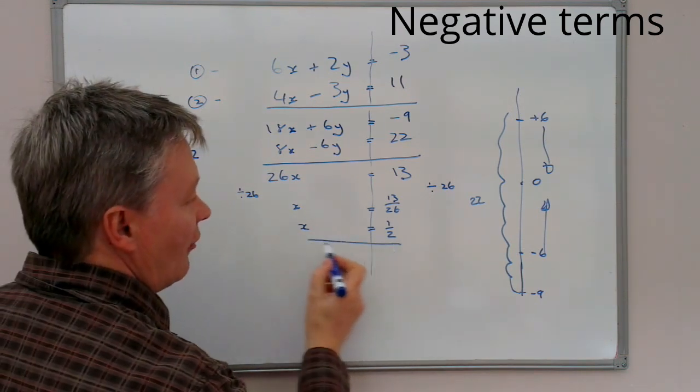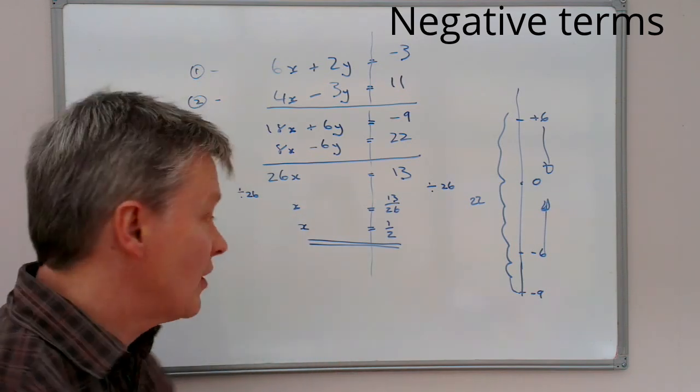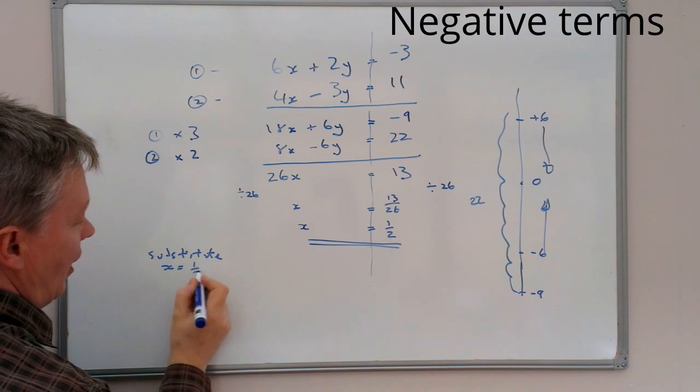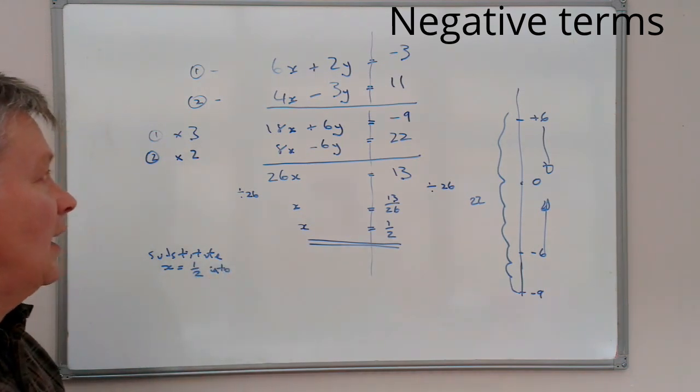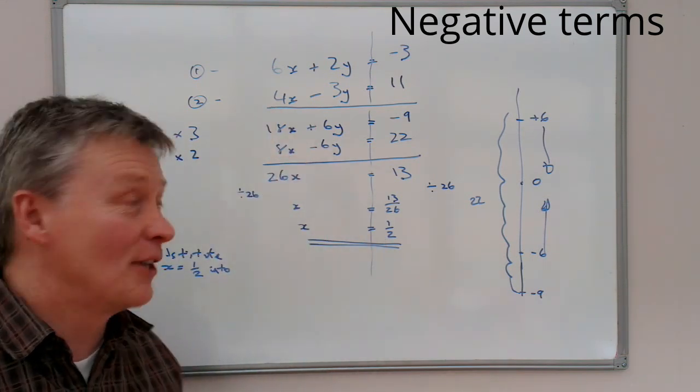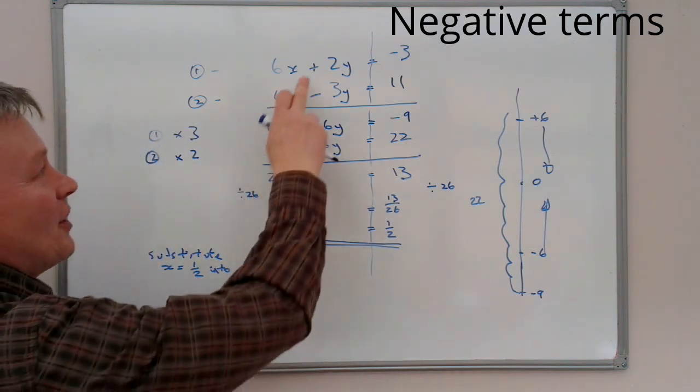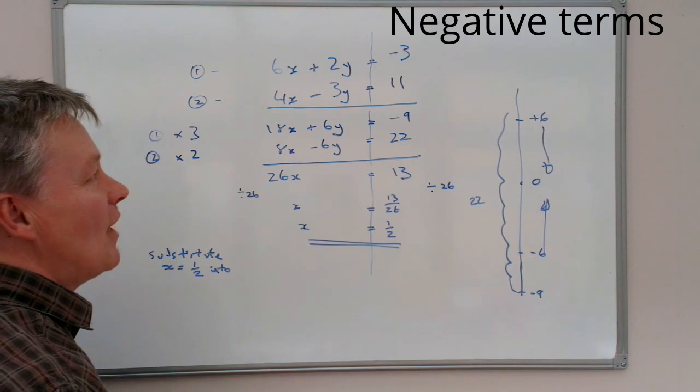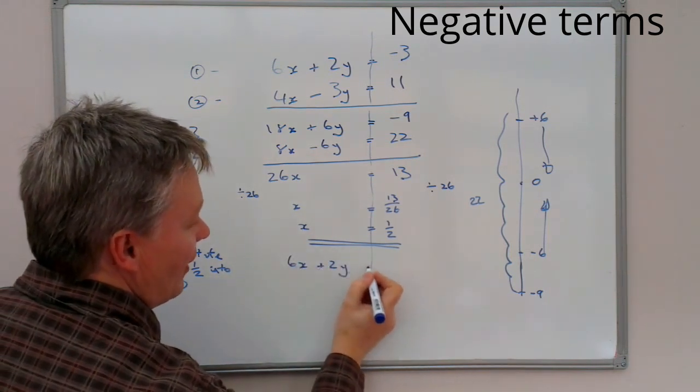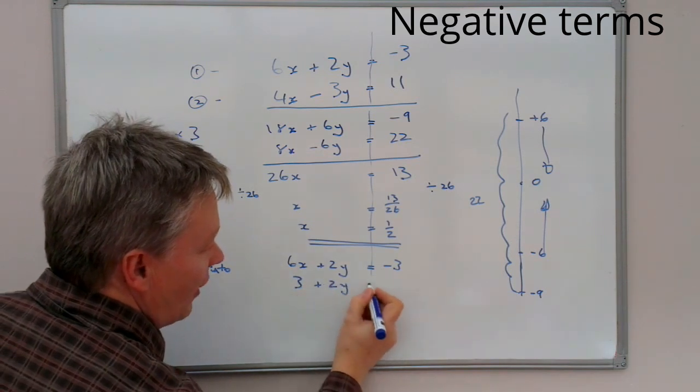I've got x equals a half. Now I can substitute that half into pretty much any of these equations. I'm going to substitute x equals a half into, let's have a look. If I put it into equation 2, I know a half times 4 is 2. If I put it into a half times 6 is going to be 3. But the big advantage is equation 1 has got a positive in there. We'll put it into 1.